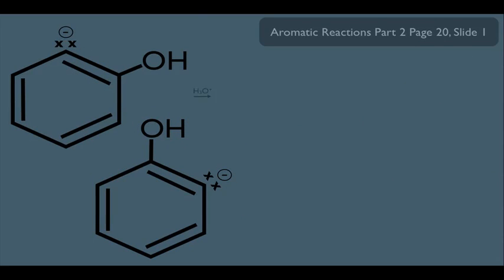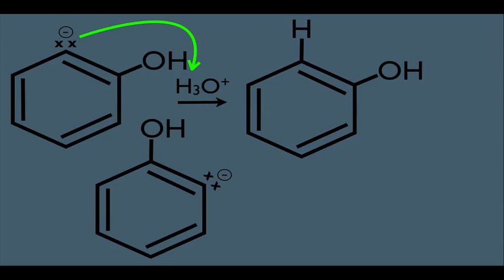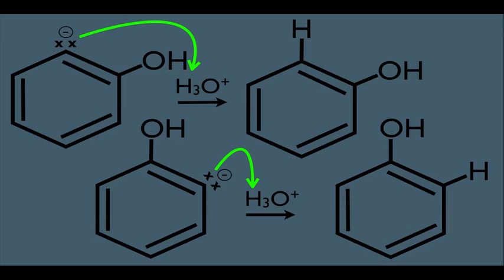So here we are adding acid to this molecule. And all this is is just an acid-base reaction, with H3O plus acting as the acid and donating a proton to our molecule here, like this. We end up with this right here as a result, a stable molecule. And that also means our other molecule that we can possibly get, the same thing happens. The H3O plus protonates those electrons there, and we end up with this as a result.